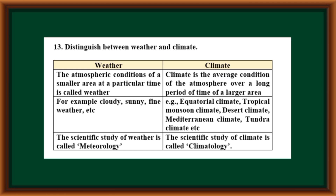Distinguish between weather and climate. Weather is the atmospheric condition of a smaller area at a particular time. Climate is the average condition of the atmosphere over a long period of time of a larger area. Examples of weather: cloudy, sunny, fine weather, etc. Examples of climate: equatorial climate, tropical monsoon climate, desert climate, Mediterranean climate, tundra climate, etc.